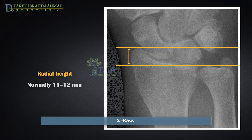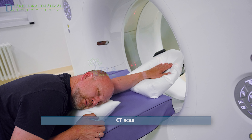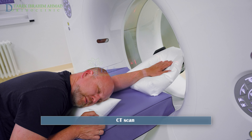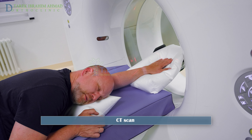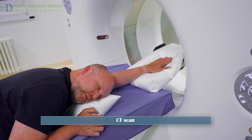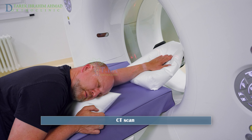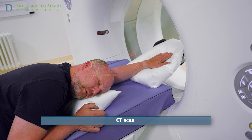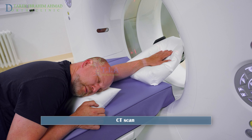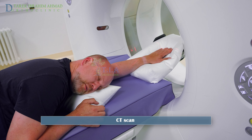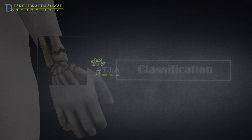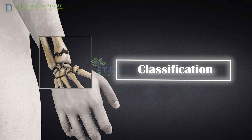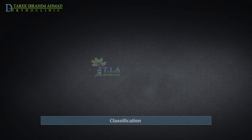In some cases, especially in intra-articular fractures, the doctor may order a computed tomography (CT) scan, which provides 3D pictures of the broken bone. This can help with surgical planning and classification. Imaging will also help determine the classification of the fracture.